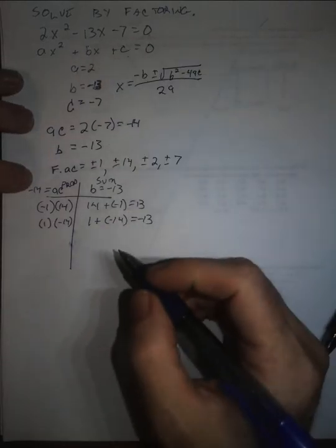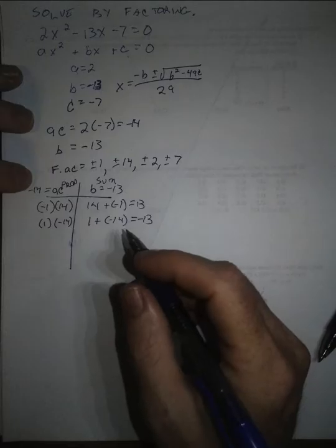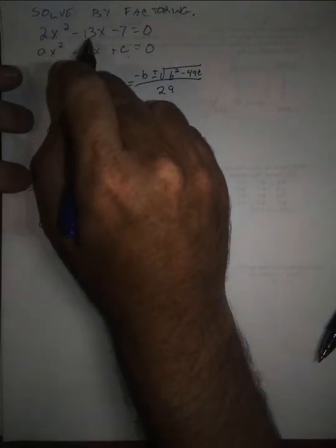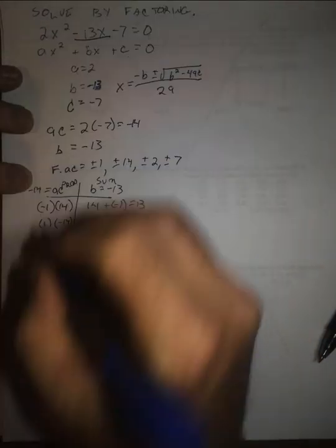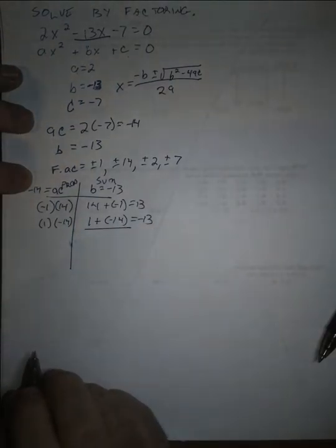So now, the trick with factoring by grouping using the AC method is we're trying to uncombine the middle term. So what we want to do is split this middle term, negative 13x, using our two numbers that we found here.